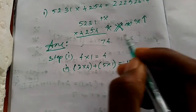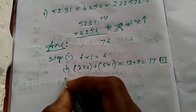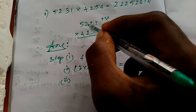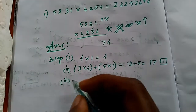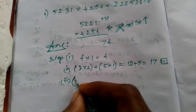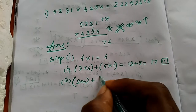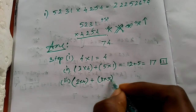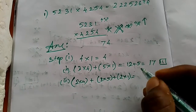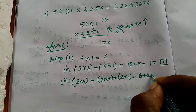Continuing the calculation: intermediate values obtained are 7, 1, 3, 2, 3, 2, 4, 8. Each digit is recorded after accounting for the carry from the previous step.